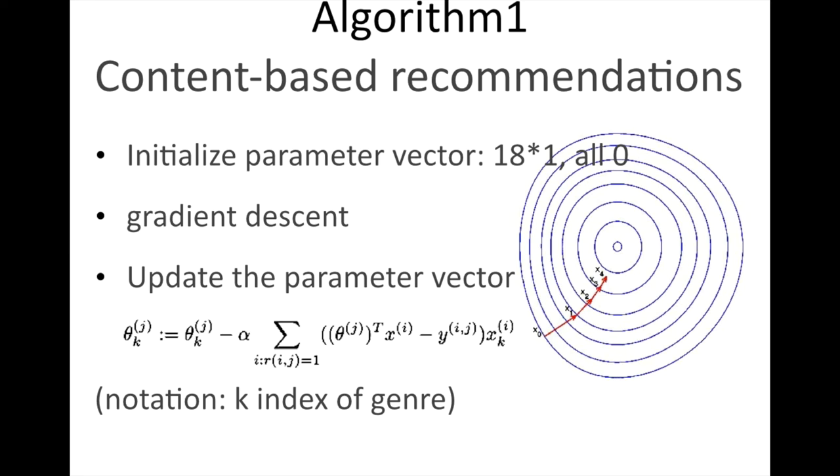For notation, k in the formula represents the index of genres in the parameter and feature vector. So theta_kj represents user j's preference for genre k. The formula should go for every element until the cost function reaches the local minimum. As we see, in content-based algorithm, we update every feature vector separately without using the relationship between them.